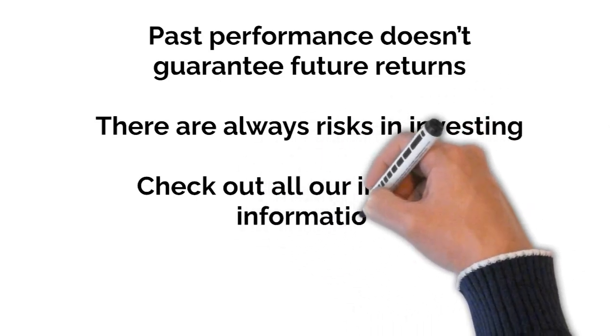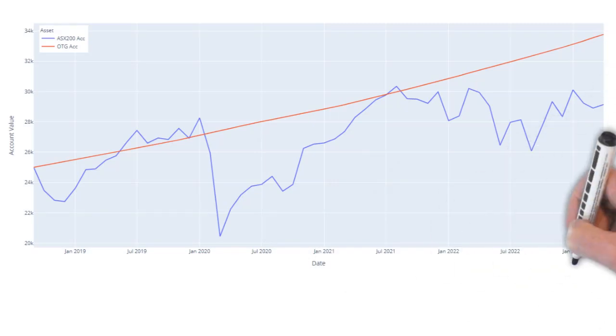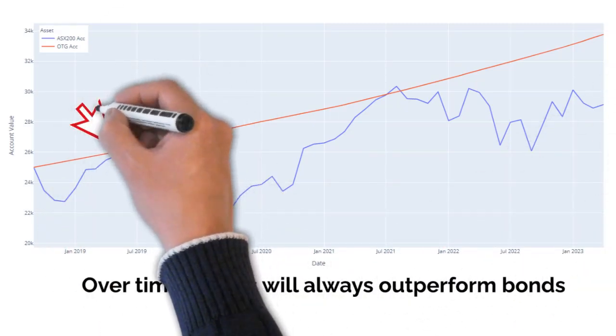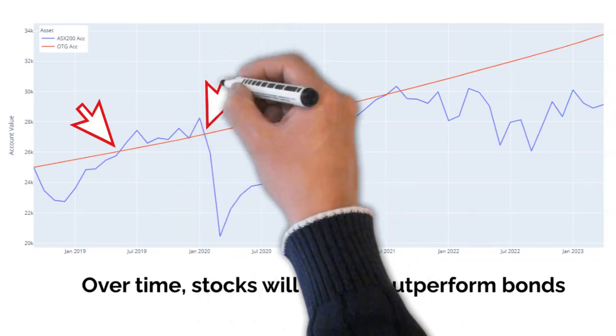History of financial markets tells us that stocks will always outperform bonds over time, yet the Hare outperformed the tortoise for only nine months out of those four and a half years.